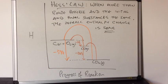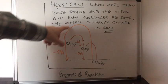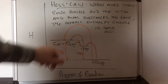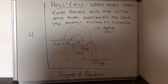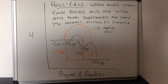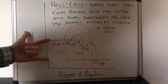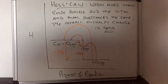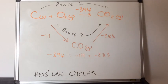This brings us to Hess's law, which states that when there is more than one route possible and the initial and final substances are the same, the overall enthalpy change is the same. Applying that here: both routes have carbon and oxygen as the initial substances, and carbon dioxide as the final substance — so regardless of which route you take, orange or brown, the overall enthalpy change is the same.